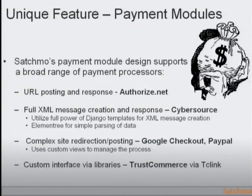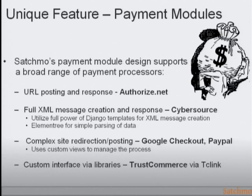Payment modules: we have several right now using various different backends. Authorize.net is probably the most often used credit card one and uses backend URL posting. Cybersource uses XML messages. We found it was overkill to manually build XML for submits, so we just used the Django template language to build XML for posting Cybersource requests. Using some extra features and hooks we can also do Google Checkout and PayPal. I keep intending to write one for Amazon, and then there's Trust Commerce as well.